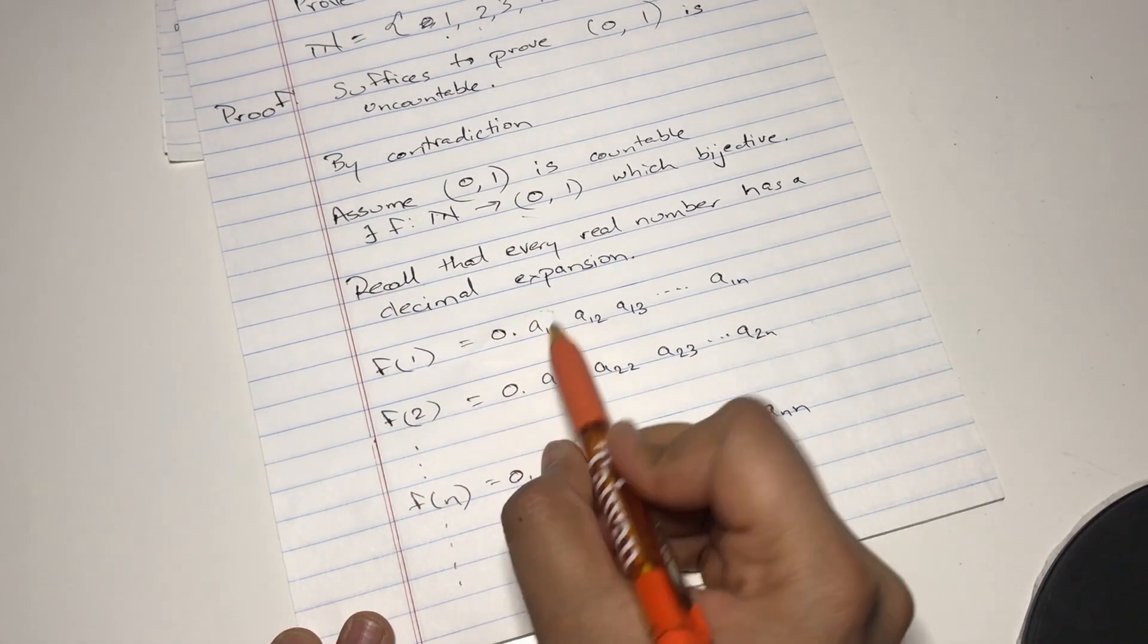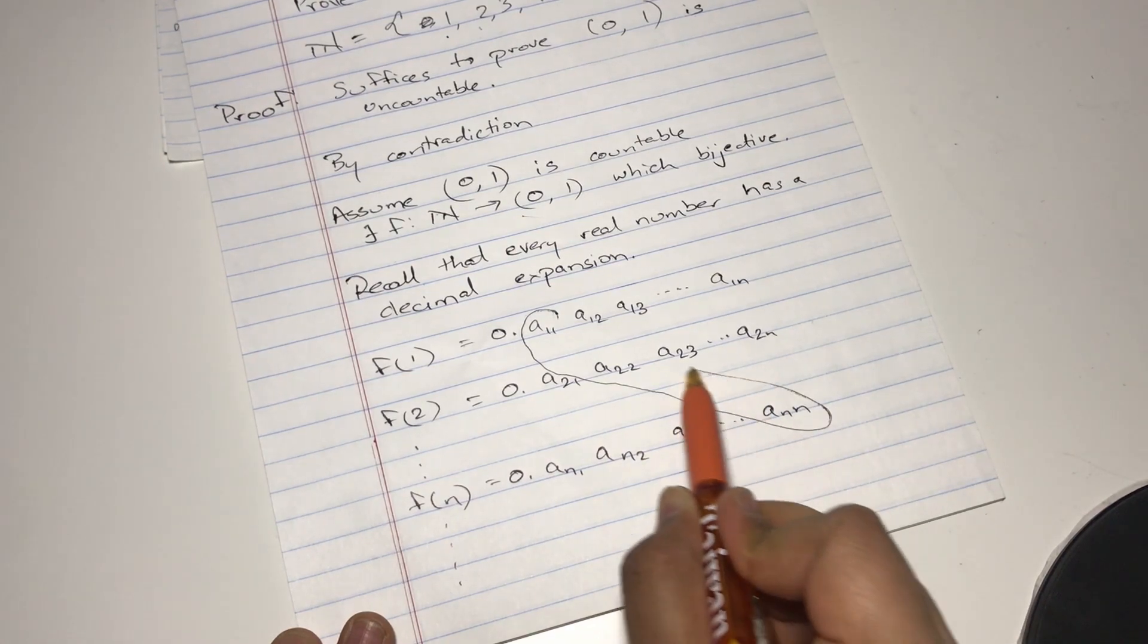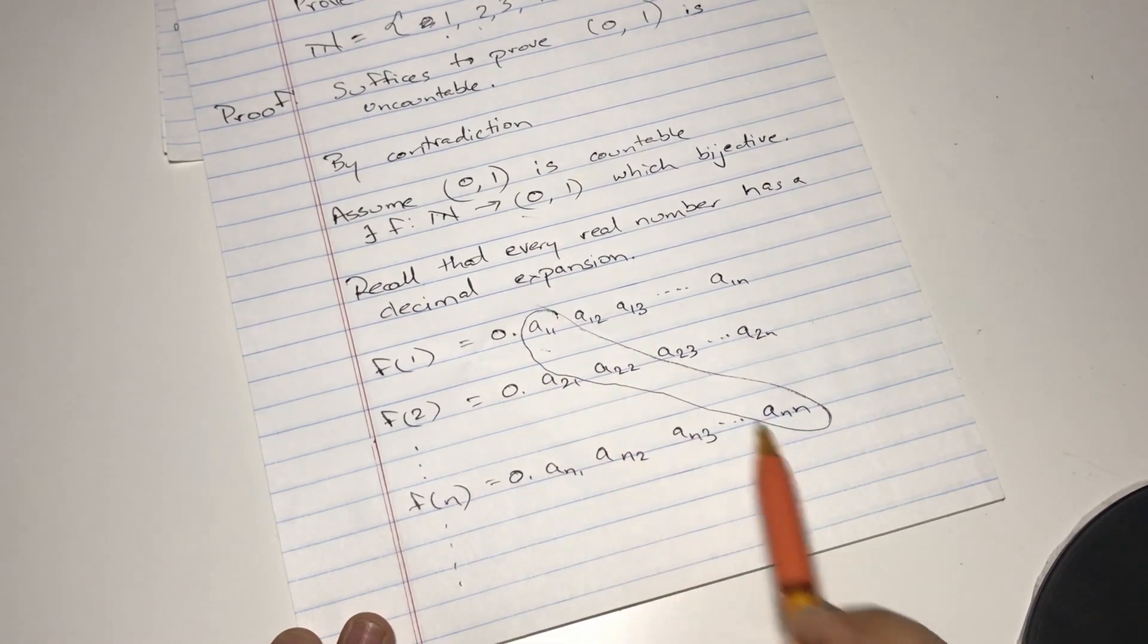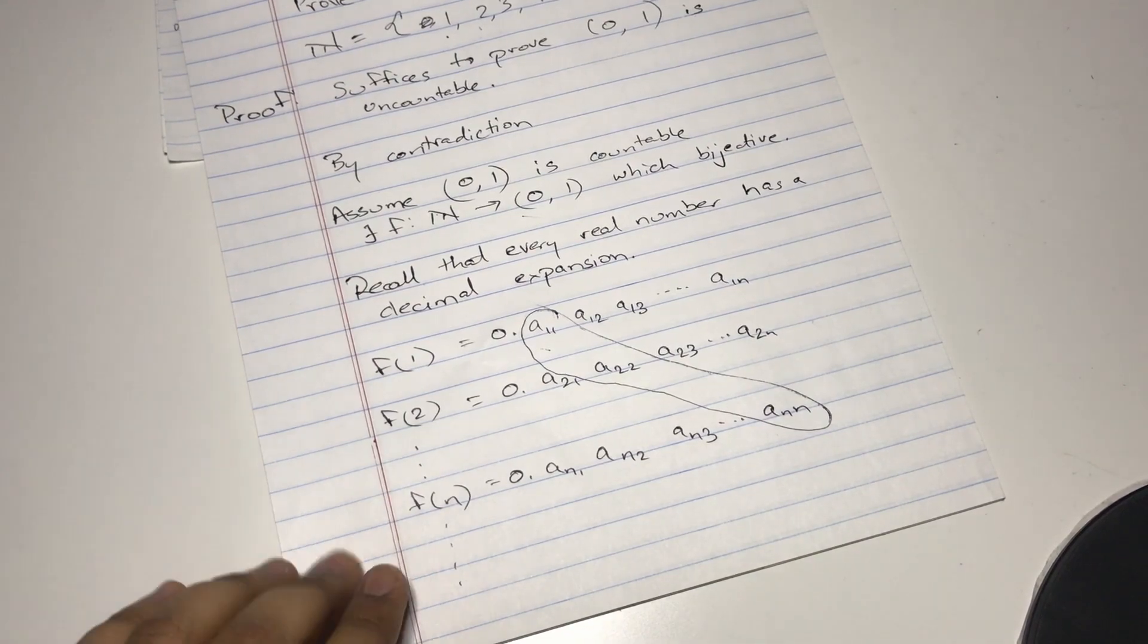But I want you to take a look at what I am circling over here. So these are a11, a22, ann, these are the diagonal terms that I want you to focus on. And now I'm just going to turn the page.